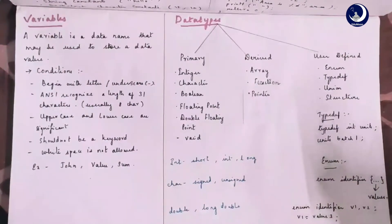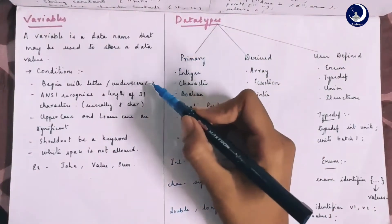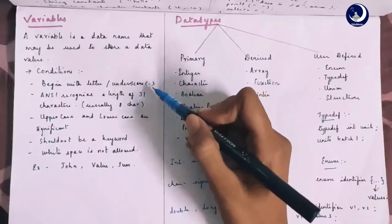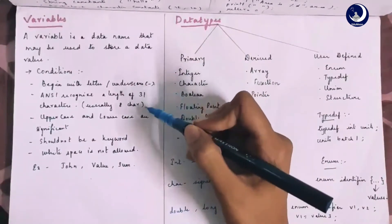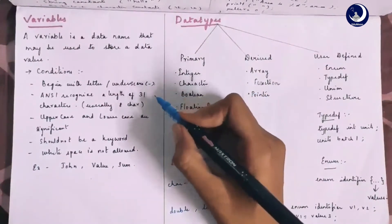Variables. A variable is a data name that may be used to store a data value. Variable is the name of the memory location. There are certain conditions to be followed while naming a variable. We have to begin the variable name with a letter or an underscore. And C recognizes the length of only 31 characters as the variable name.